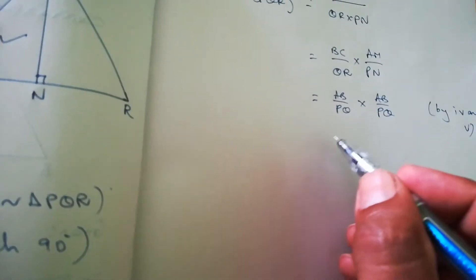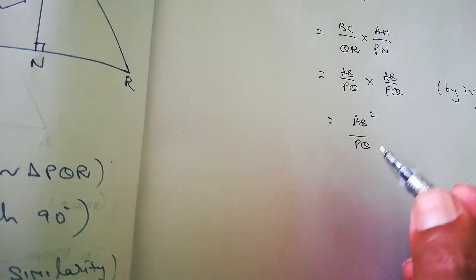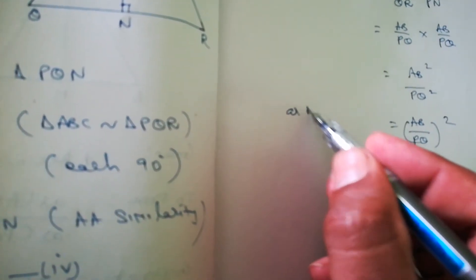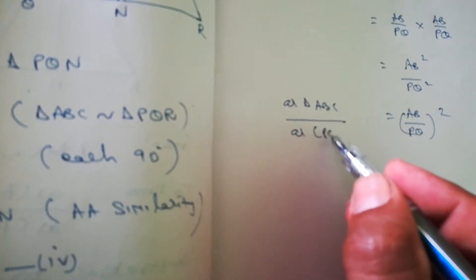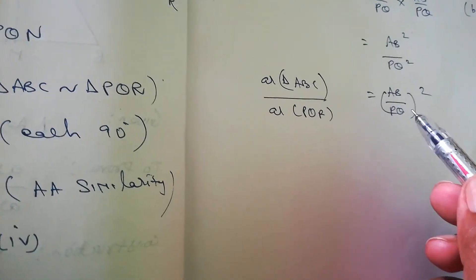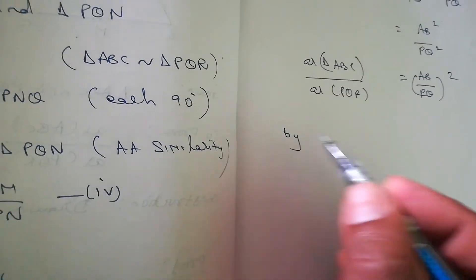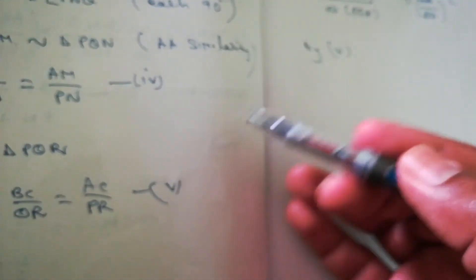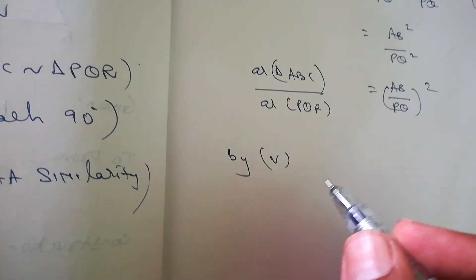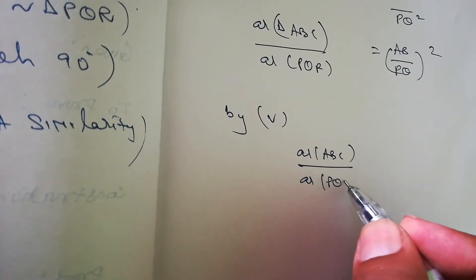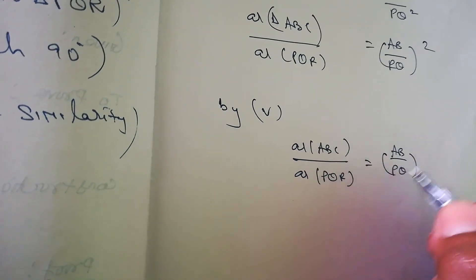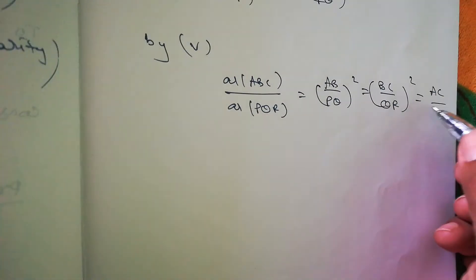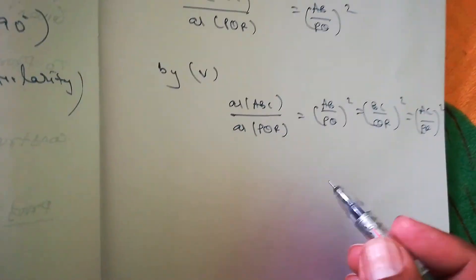Therefore area of triangle ABC by area of triangle PQR equals (AB/PQ)² = (BC/QR)² = (AC/PR)², using equation five where all corresponding side ratios are equal. Hence proved.